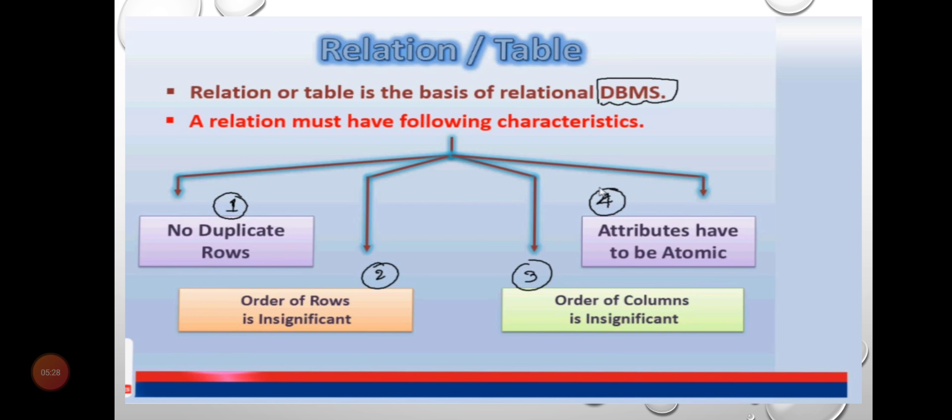Now we are talking about relation or table. Relation or table is the basis of relational DBMS (Database Management System). A relation must have the following characteristics: no duplicate rows, order of the row is insignificant, order of the column is insignificant, and attributes have to be atomic.